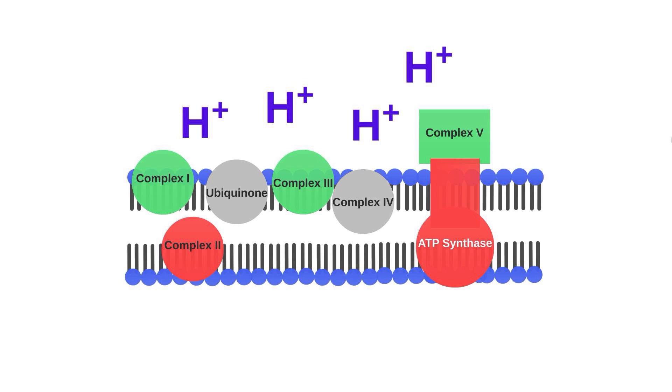Remember, NADH donates its electrons at complex 1, so its electrons facilitate a proton being pumped at complex 1, 3, and 4. Now, FADH gives its electrons at complex 2, which is the only complex in the ETC that does not pump protons. The electrons from FADH facilitate hydrogen pumping at complex 3 and 4. As a result, NADH results in a higher production of ATP than FADH.